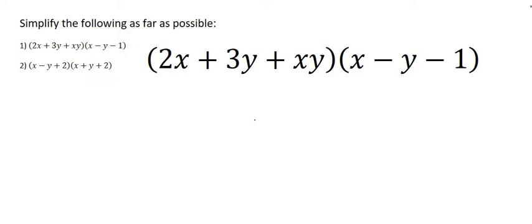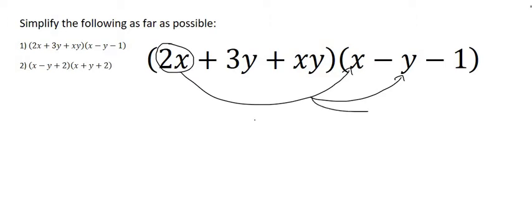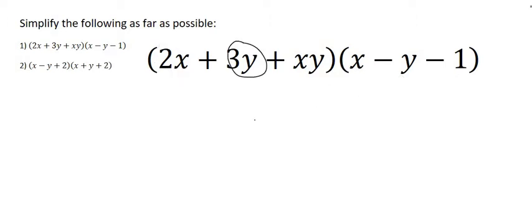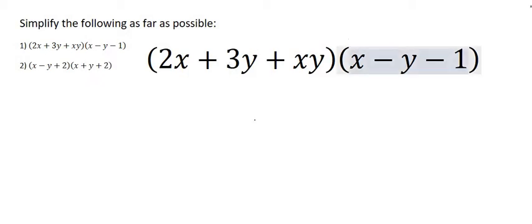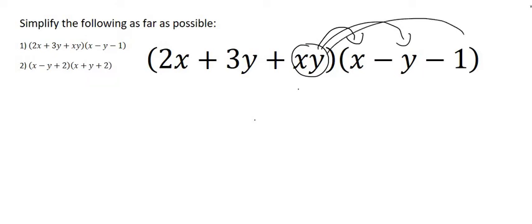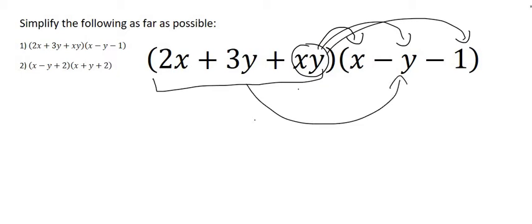What I mean by that is that this 2x is going to have to go to this x, to this y, and to this minus 1. This 3y is going to have to go to this x, to this y, and to this 1 over here. And then lastly this xy is going to have to go to this x, to this y, and to this 1. So everything in this bracket has to multiply with everything in that bracket.